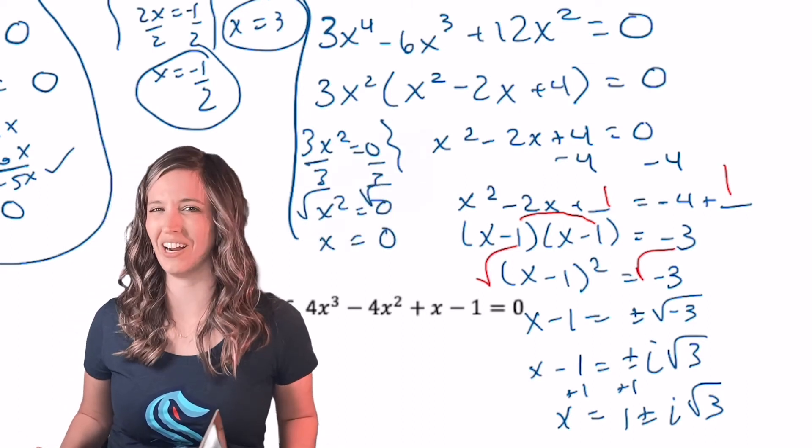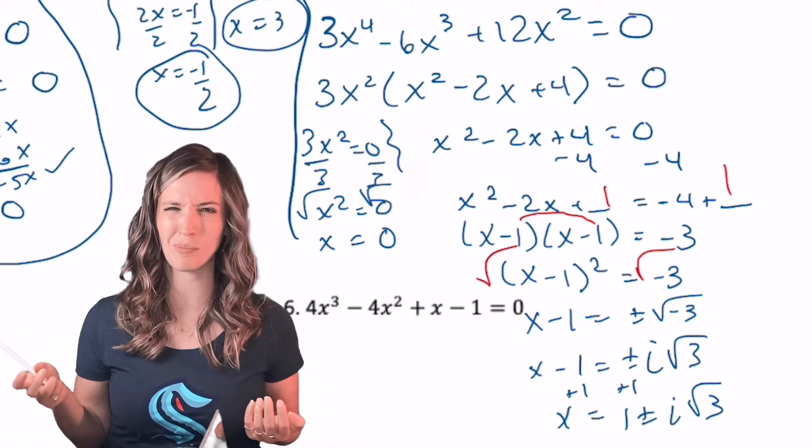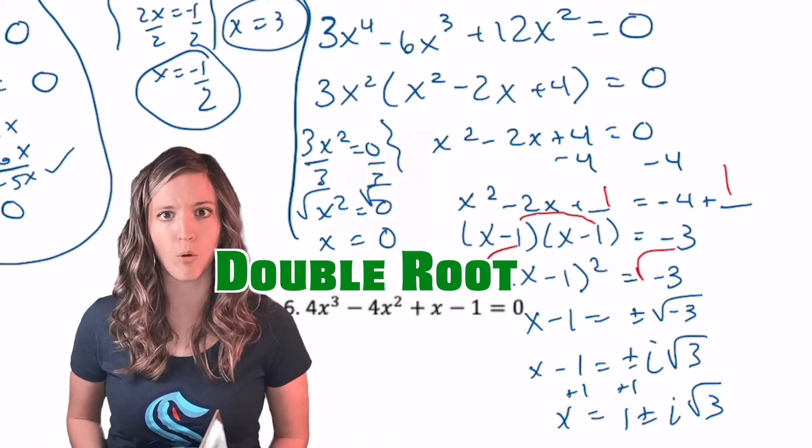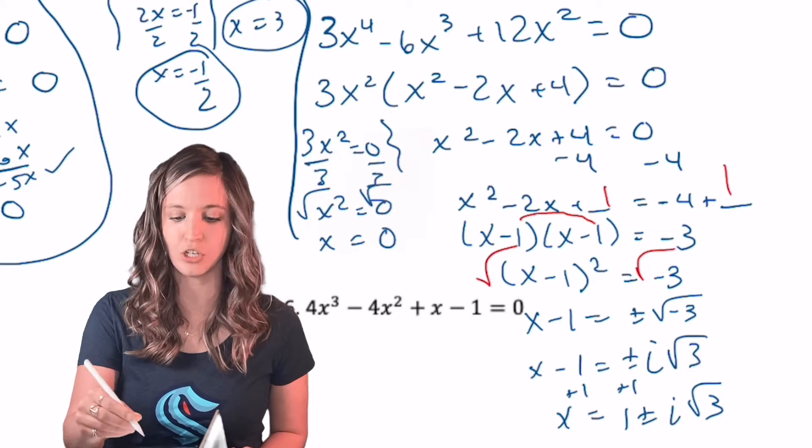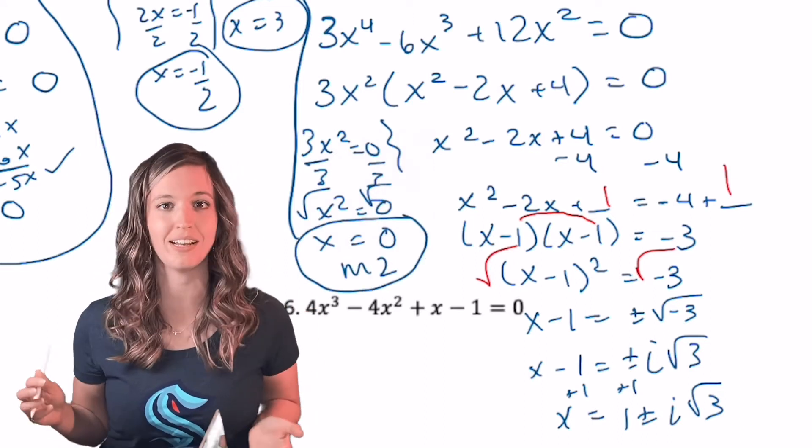Well, I'm going to get X equals zero there. Now, when I square rooted both sides, technically I had a plus or minus there, but plus or minus zero, that's still zero. So what we have here is what we call a double root. So I have X equals zero with a multiplicity of two, which just means that that solution occurs twice. And we'll totally see what that does to our graph later.